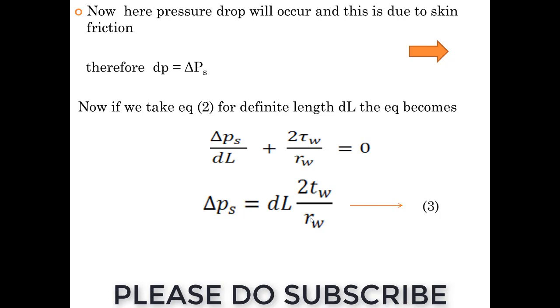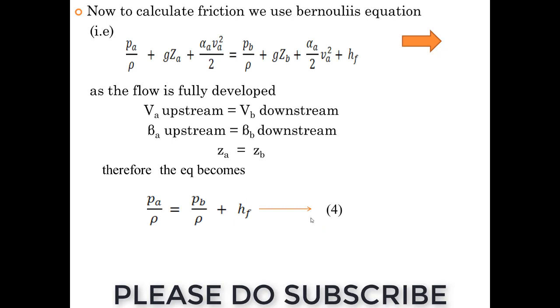We are trying to define this delta P in the below way: delta P by dL plus 2 tau by R tau. Now I am trying to apply this for a Bernoulli's equation.